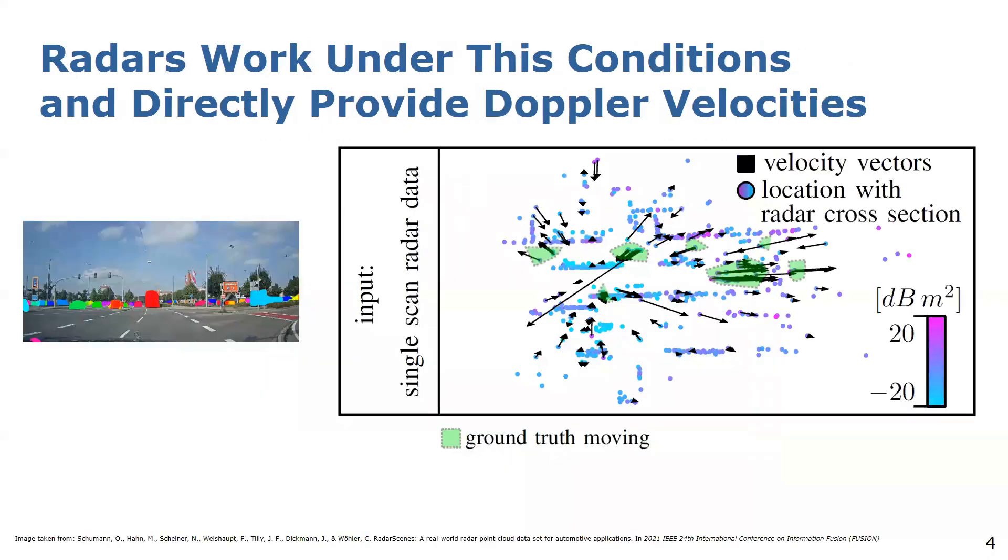Additionally, radar sensors directly provide a Doppler velocity which enables the identification of moving objects in single scans as you can see here. Furthermore, radar sensors provide the radar cross-section values which depends on the surface of the material and the shape of the object to differentiate between moving agents.